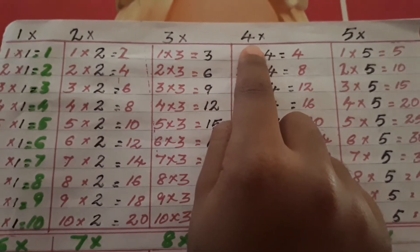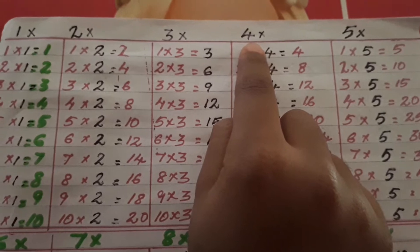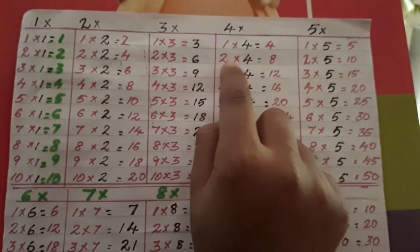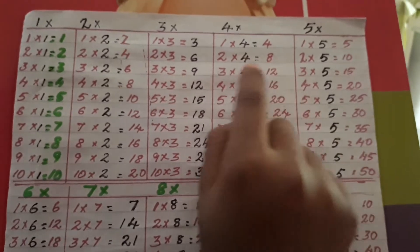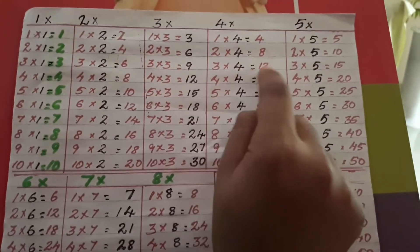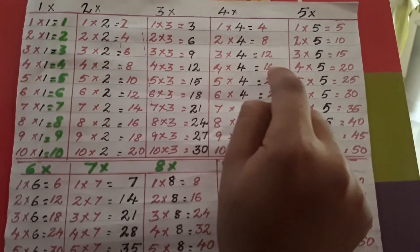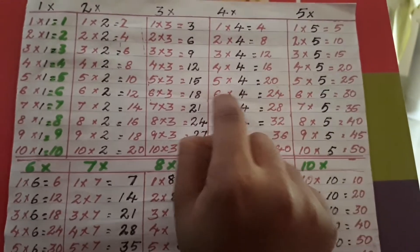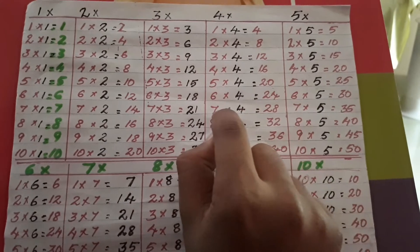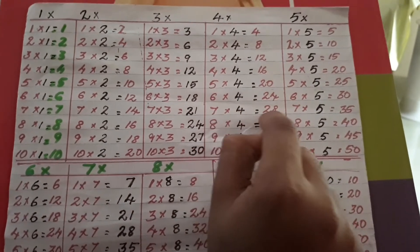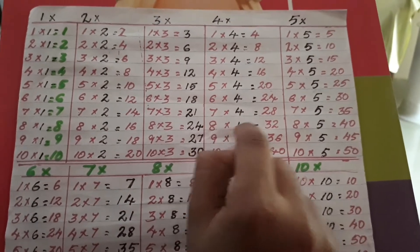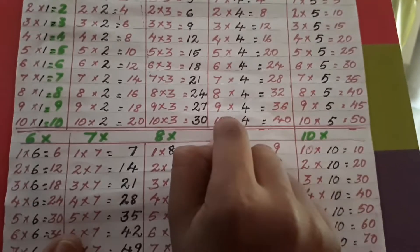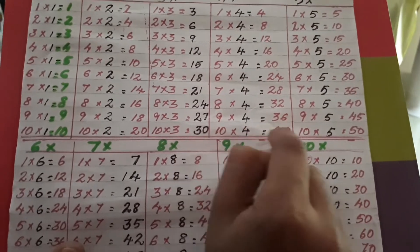Now, let's see table of 4. 1 four is 4. 2 twos are 8. 3 twos are 12. 4 twos are 16. 5 twos are 20. 6 twos are 24. 7 twos are 28. 8 twos are 32. 9 twos are 36. 10 twos are 40.